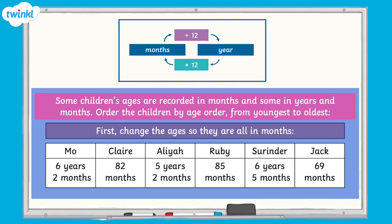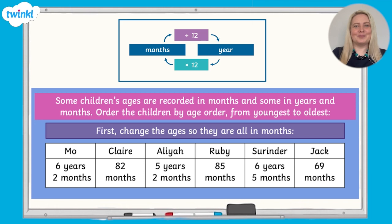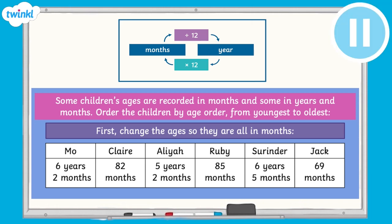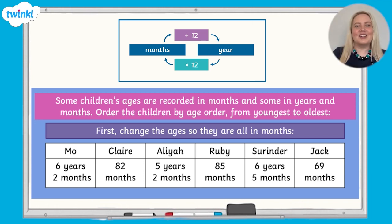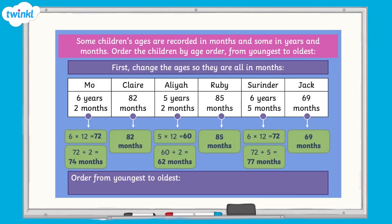Now it's your turn. Some children's ages are recorded in months and some in years and months. Order the children by age from youngest to oldest. By converting all of the ages to months, we can see that Aaliyah is the youngest, followed by Jack, then Moe, then Sarinda, Claire, and finally Ruby.